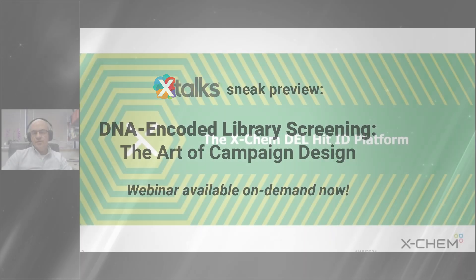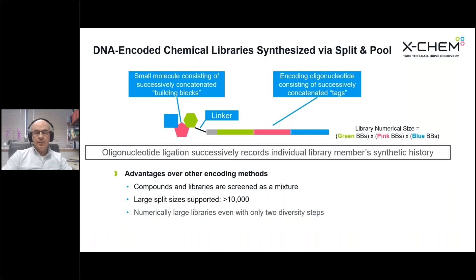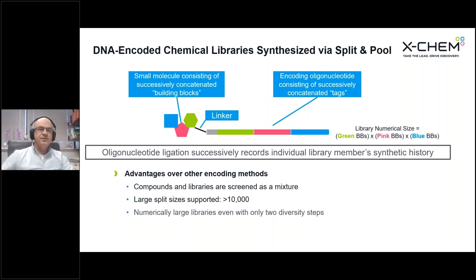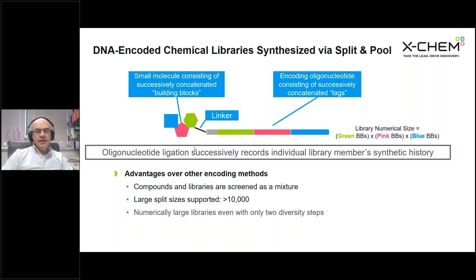So first of all, very briefly, I'm going to introduce our platform. Our platform is comprised of individually chemically synthesized libraries, and one molecule from one of those libraries is represented in the center of this screen. The small molecule that is encoded is represented on the left side, and this is what we call a three-cycle library — comprised of three building blocks: green, red, and blue.